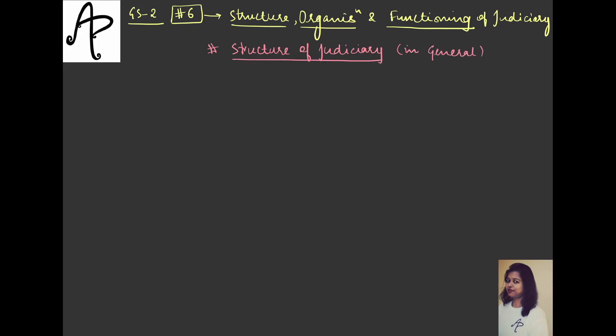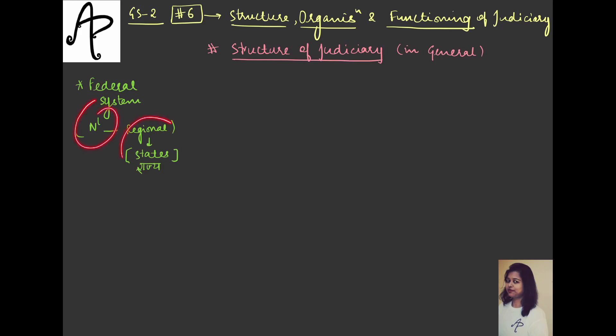If you see the basic introduction to judiciary, you are aware that the kind of system we have in the country is the federal system. Usually in federal systems, you have the government at two different levels — at the national level and at the regional level. For us, the regional level we call the states. So we have the government existing at two levels and the constitution itself divides the power between the national government and the state government.